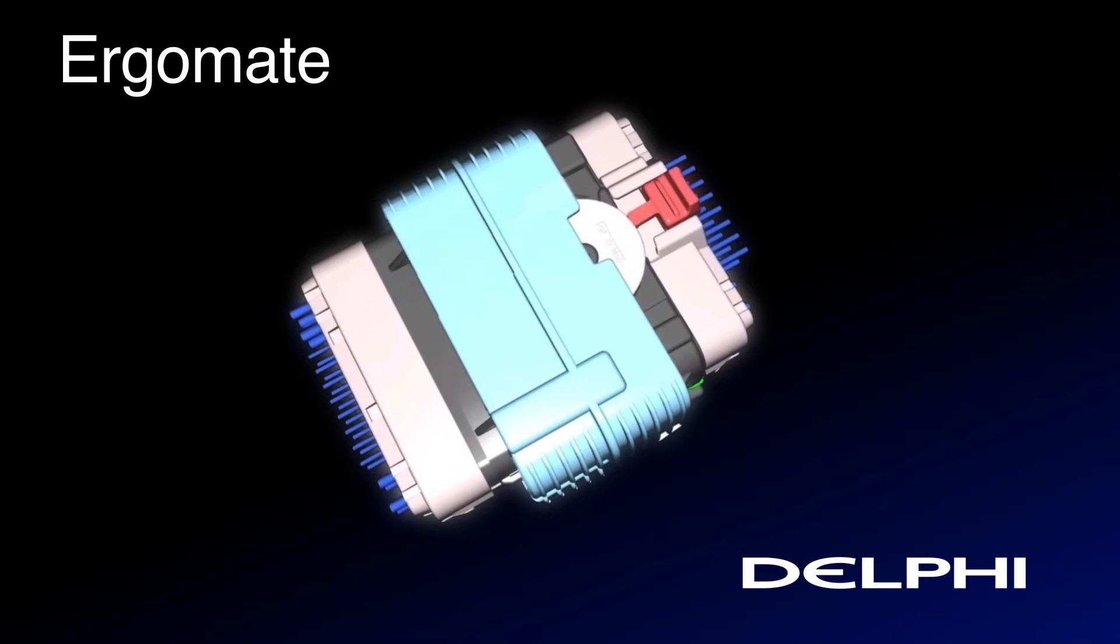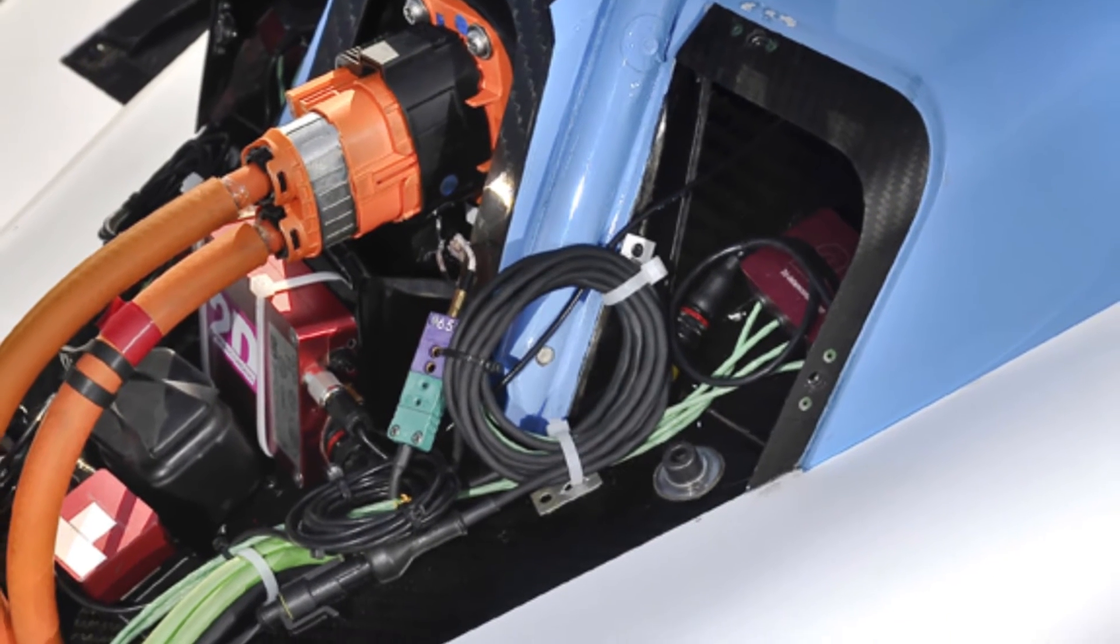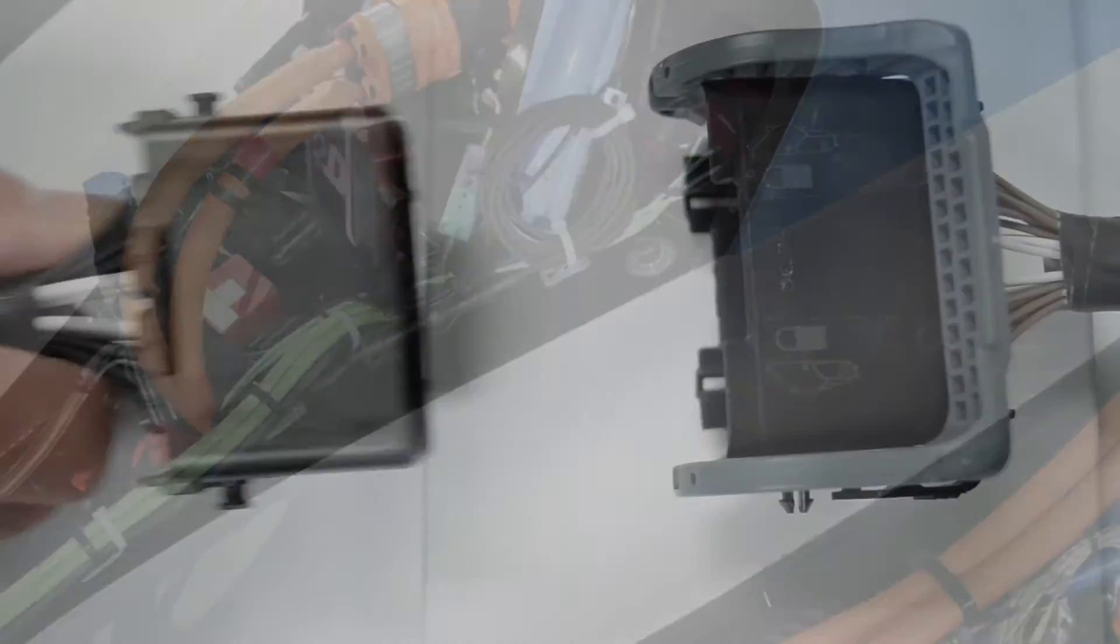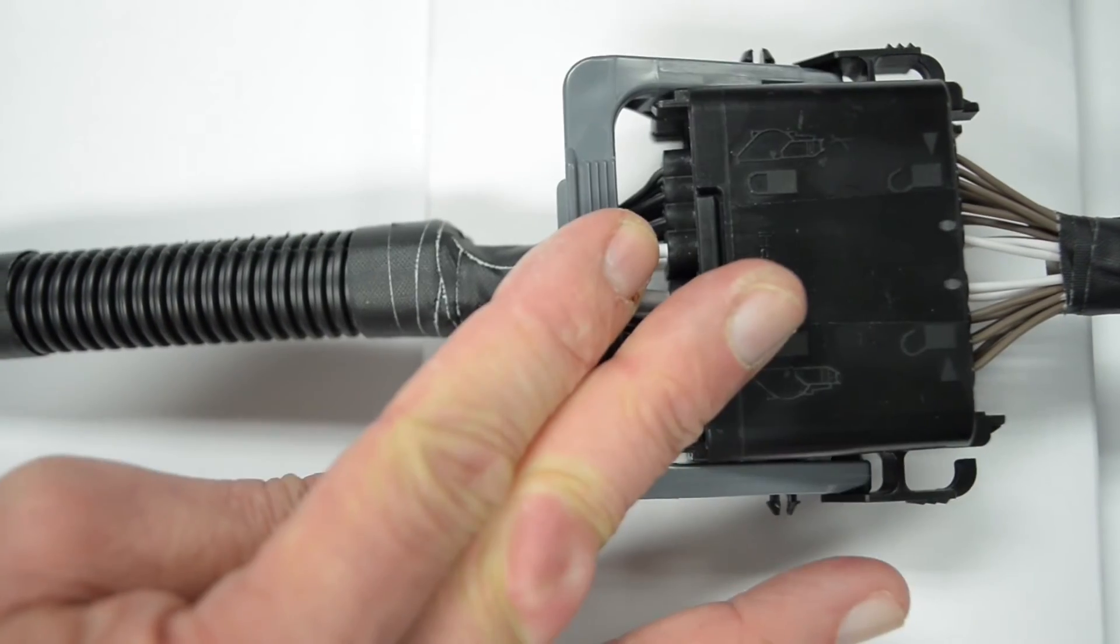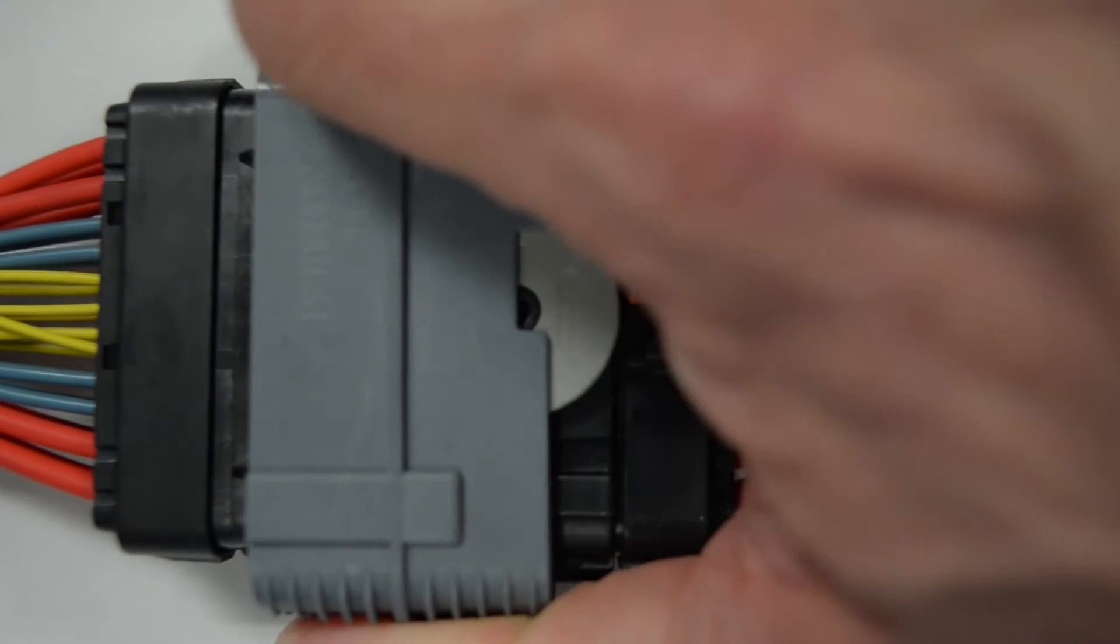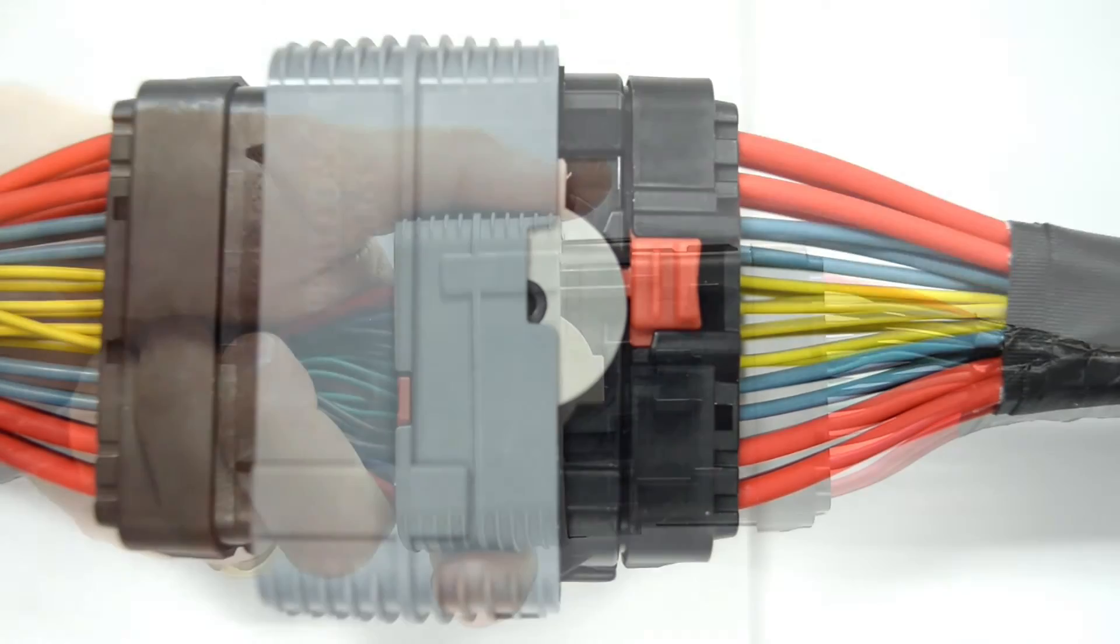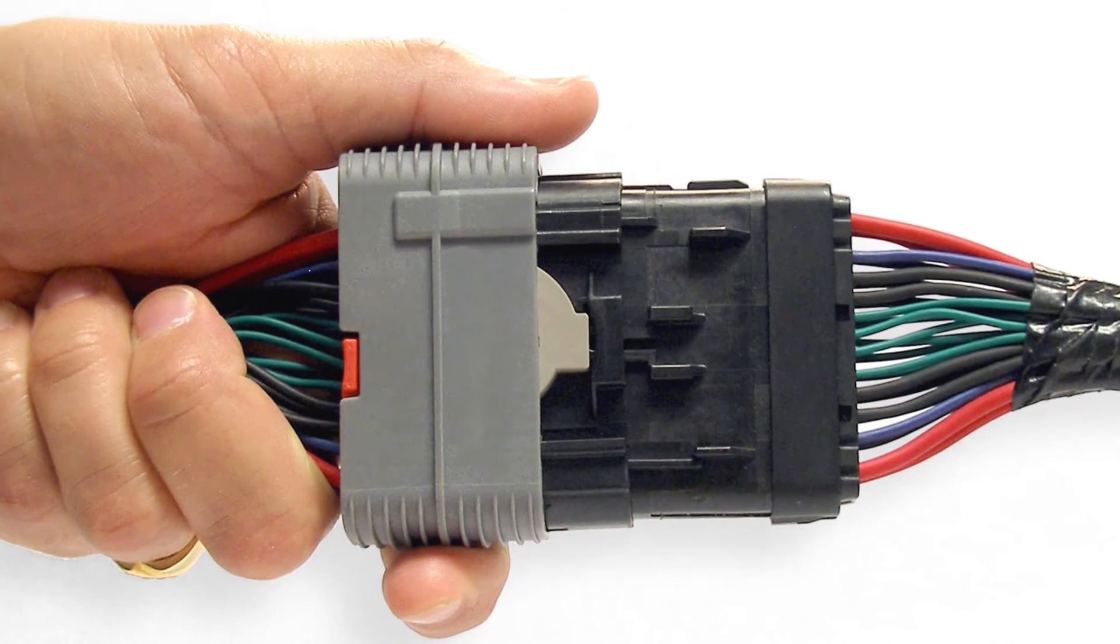Also when you're dealing in situations where these connections have to be made in tight situations, like under a seat, between an engine and a firewall, there's limited space. And if you're dealing with a large Mate assist type connector that may have a large lever on it, the ErgoMate technology removes that lever, it removes the space required to throw that lever. It enables you to put a large connection in a very tight space and still be ergonomically accessible to the line operator to make that connection.